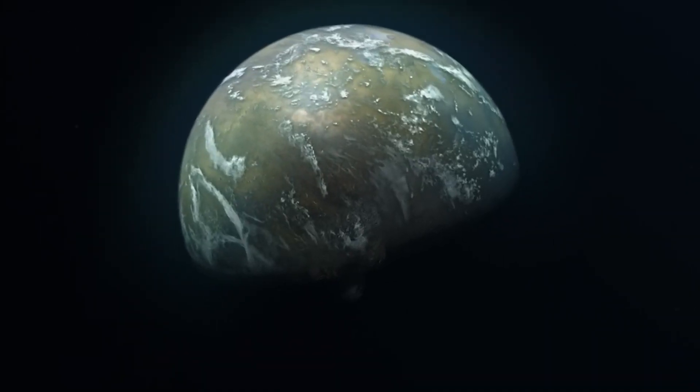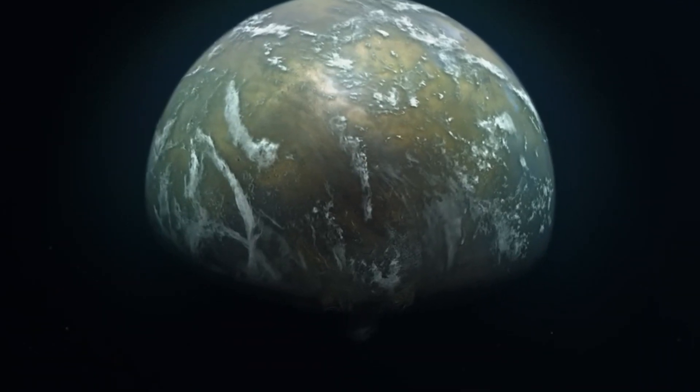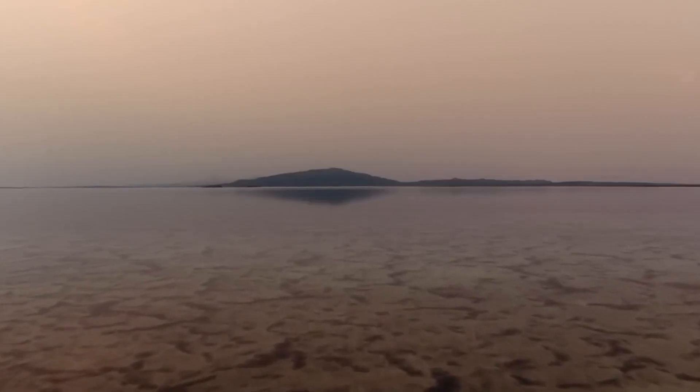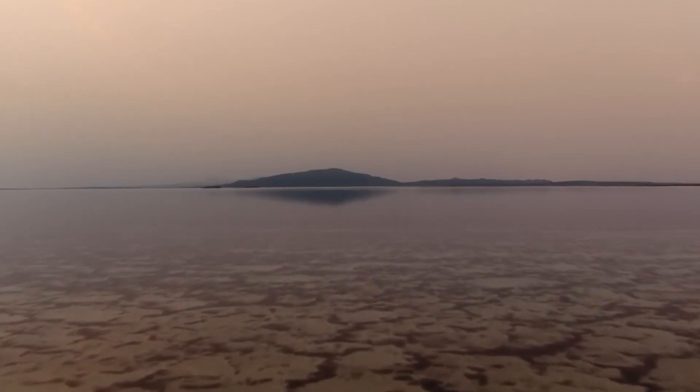Unlike some other exoplanets, Gliese 370b is fortunate to avoid being tidally locked to its star. This means it enjoys its day-night cycle, creating an even distribution of heat across its surface. A moderately high gravity should smoothen out its terrain, potentially leading to vast, warm and shallow seas, places where life may thrive.